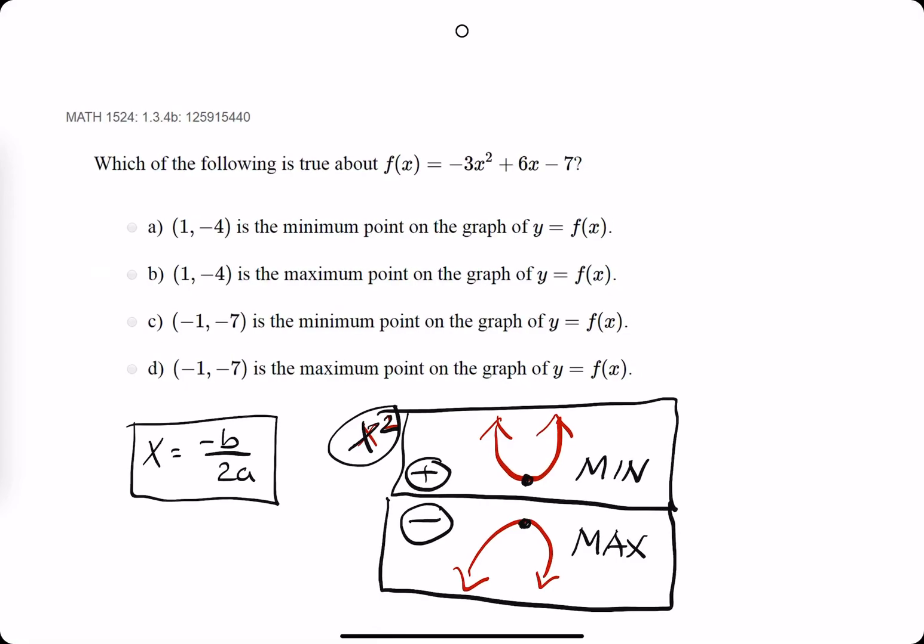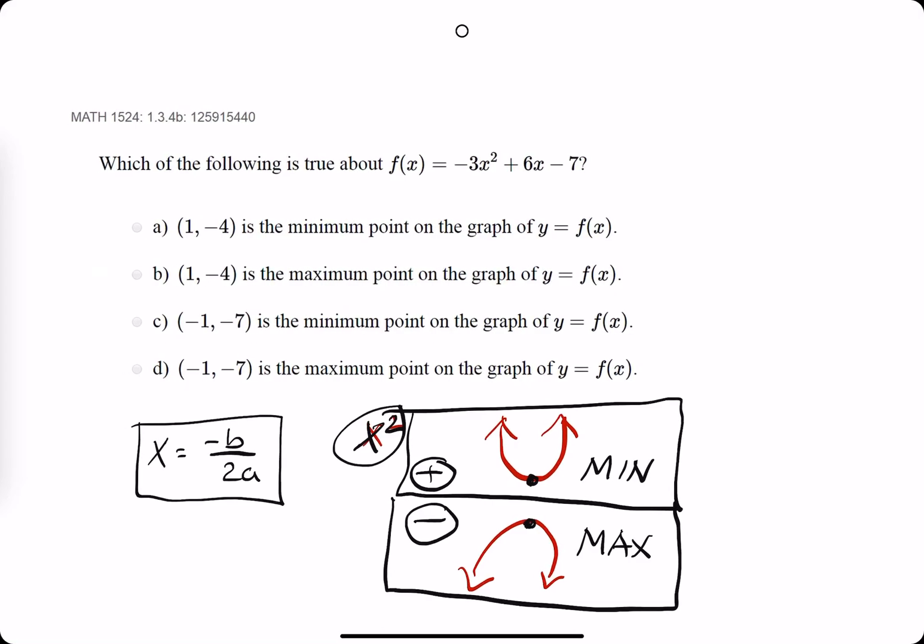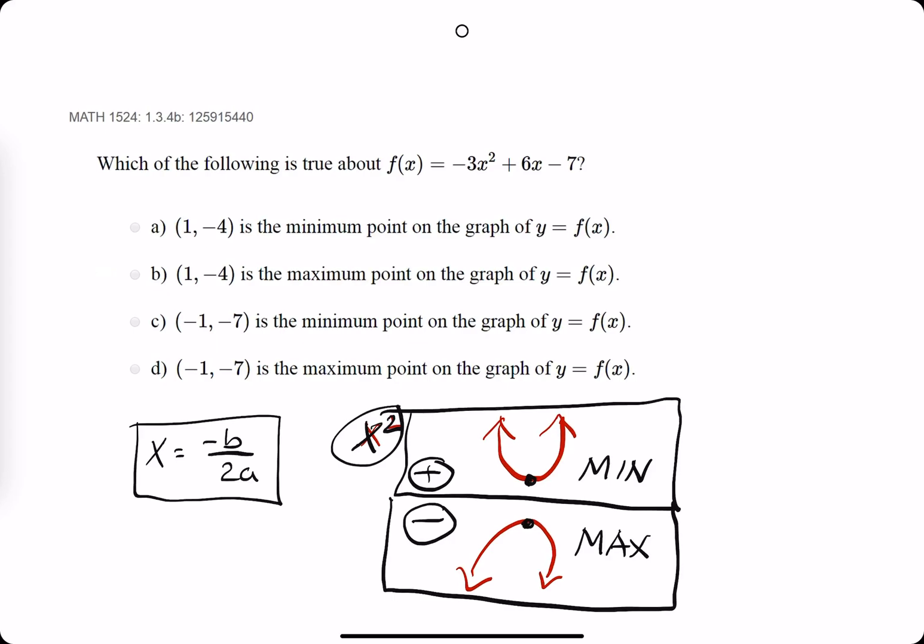Okie dokie. So in this problem, they say which of the following is true about f of x equal to negative 3x squared plus 6x minus 7.